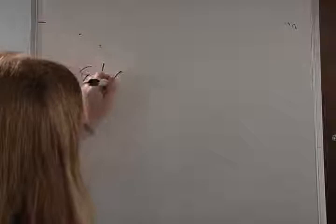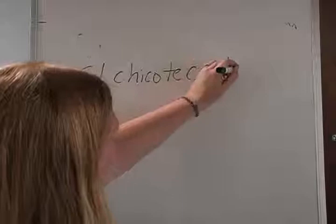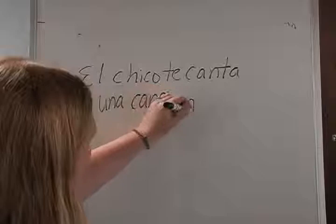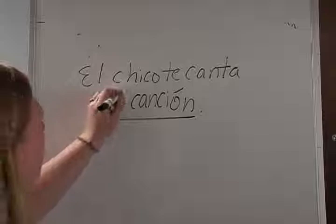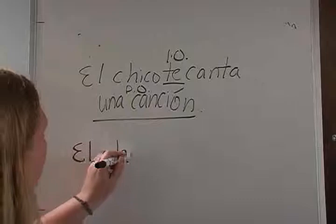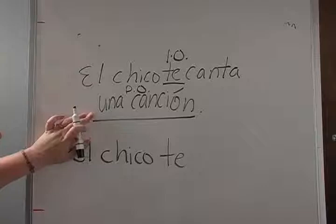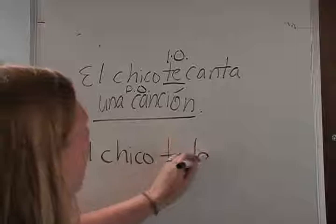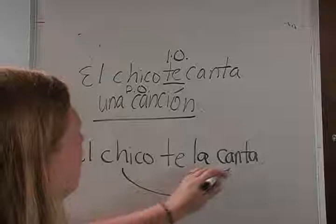What does he sing? Una canción — this is your direct. Who does he sing it to? To you — this is your indirect. We need to rewrite this using our object pronouns. El chico — indirect comes first: te. Una canción is singular and feminine, so our object pronoun would be la. El chico te la canta. The boy sings it to you — that's how you would read that sentence.